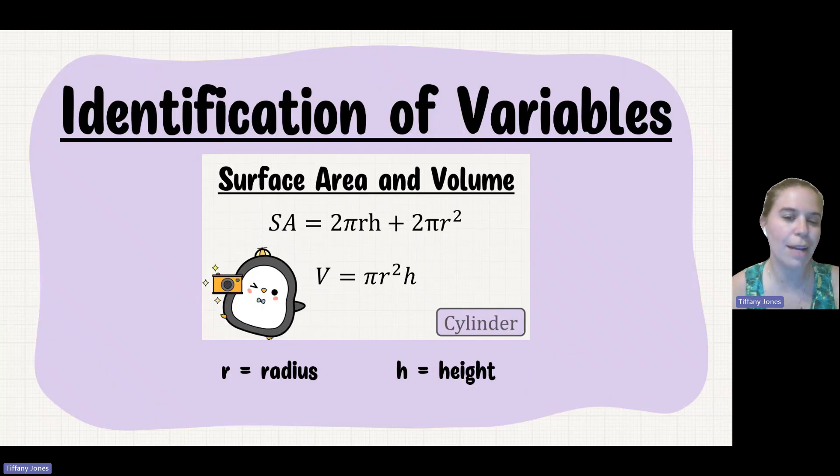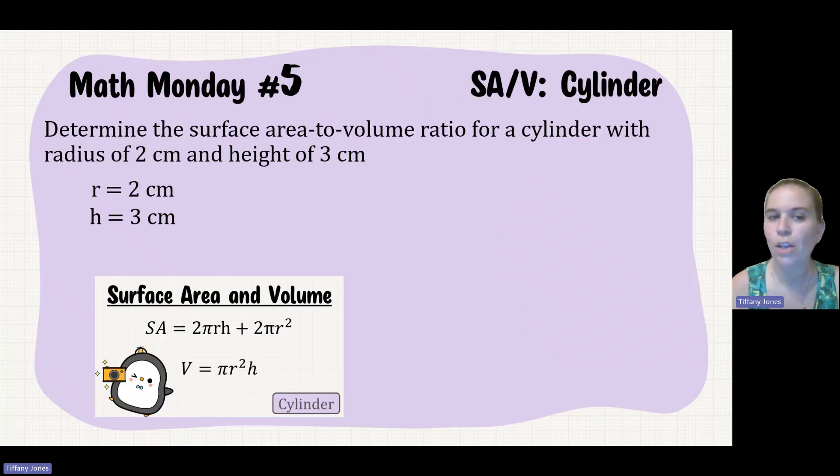In case you were wondering, r is going to be radius and h is going to be height. So if we determine the surface area to volume ratio for a cylinder with a radius of 2 and a height of 3, we sub it into the formula.